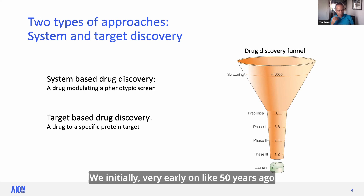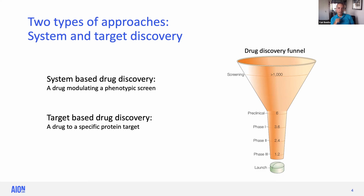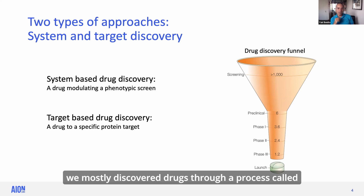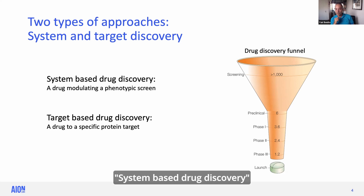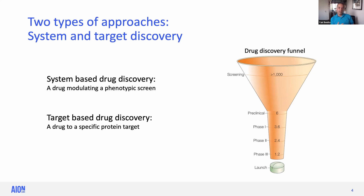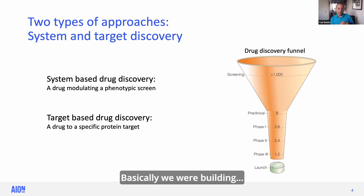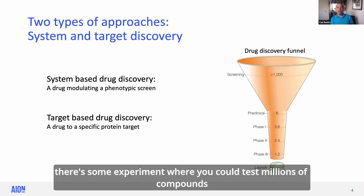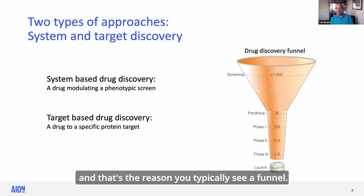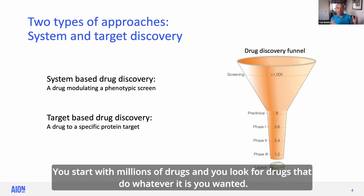So initially, very early on, like 50 years ago, we mostly discovered drugs through a process called system-based drug discovery, and this was based on a screen. Basically, we were building assays — tests, some experiment where you could test millions of compounds, and that's the reason you typically see a funnel. You start with millions of drugs, and you look for drugs that do whatever it is you want to do.